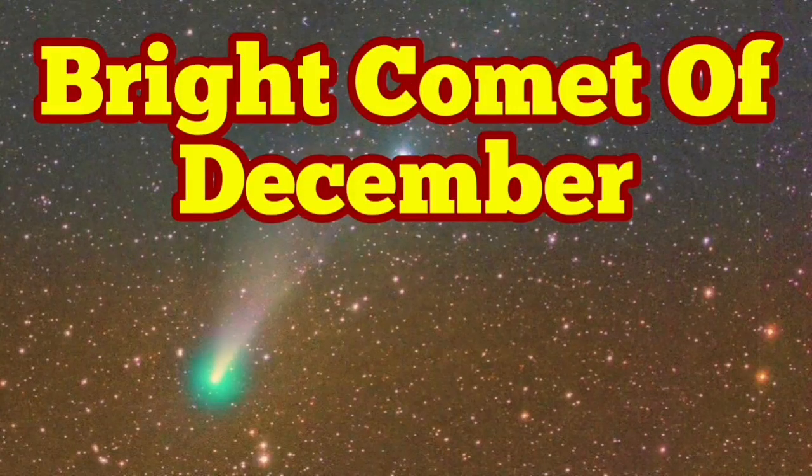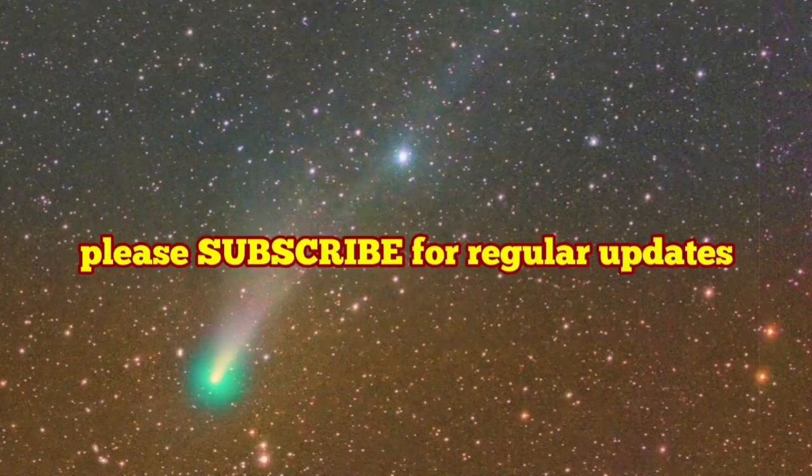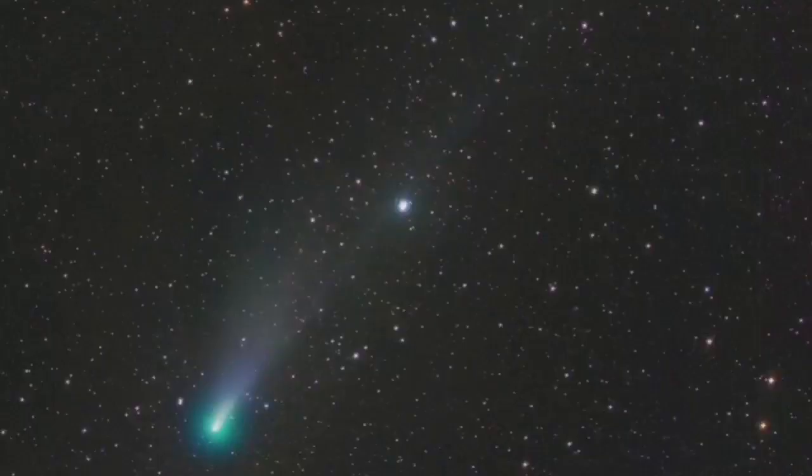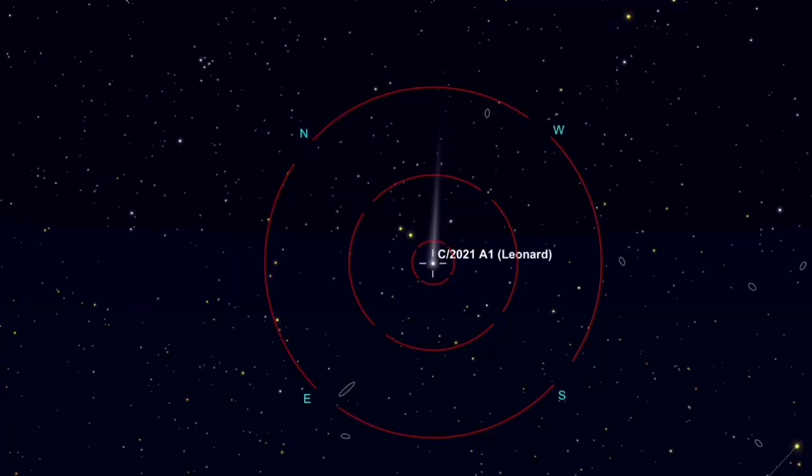A bright comet will be visible in December to the naked eye. This is Comet C2021A1-Leonard, and it's at the moment in the Canis Venatici constellation. You can see the TELROD marker.